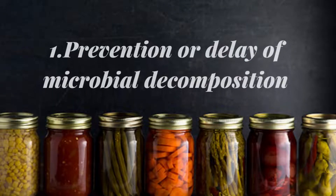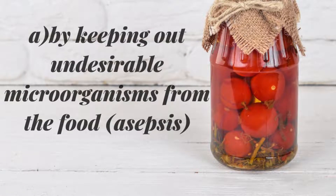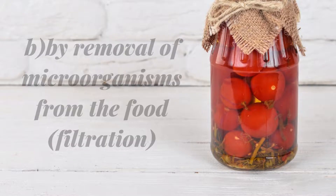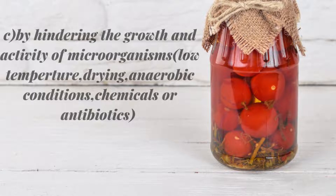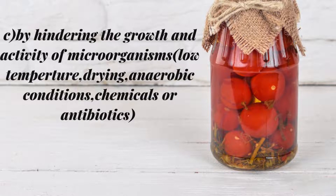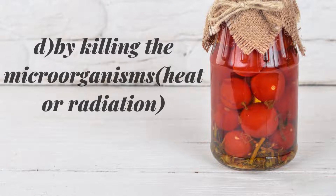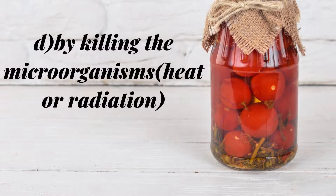First: Prevention or Delay of Microbial Decomposition. This is achieved by keeping out undesirable microorganisms from the food (absence); by removal of microorganisms from the food (filtration); by hindering the growth and activity of microorganisms using low temperature, drying, anaerobic conditions, chemicals, and antibiotics; and by killing microorganisms through heat or radiation.